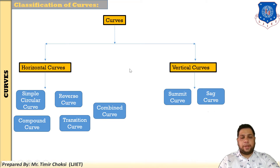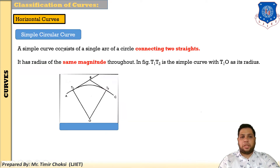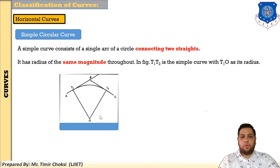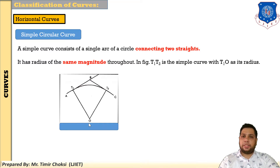Now I will explain each type in detail. First is the simple circular curve. A simple circular curve consists of a single arc of a circle connected between two straights. It has a radius of the same magnitude throughout. In the figure, T1 and T2 form the simple circular curve, and T1O and T2O are the radii — same magnitude. So when a single arc with the same magnitude radius is used, it is called a simple circular curve.